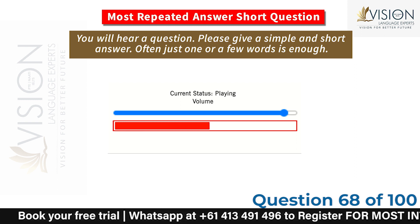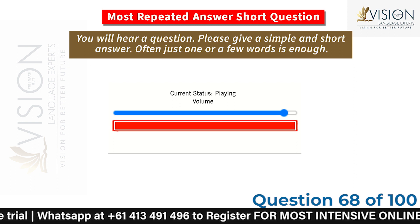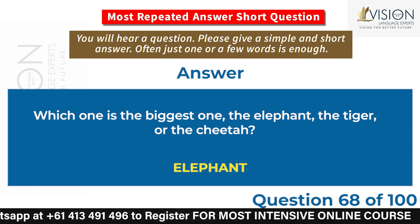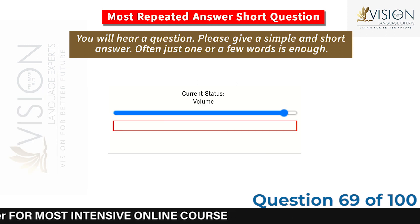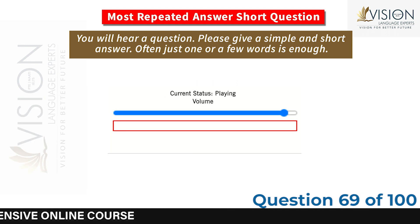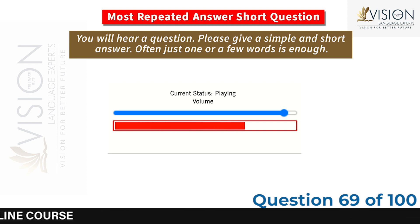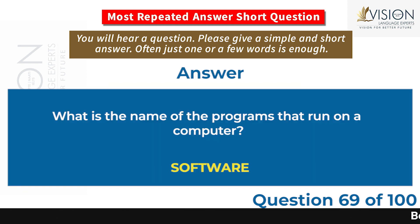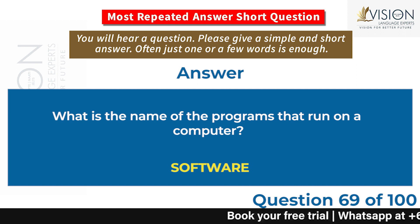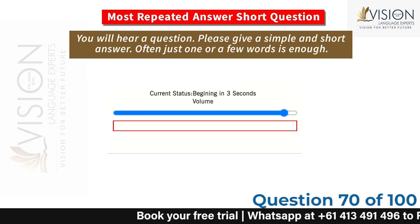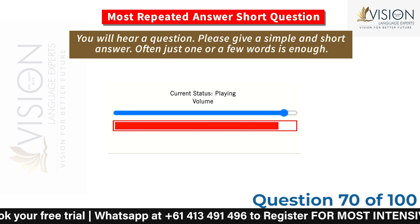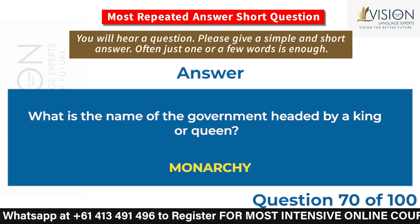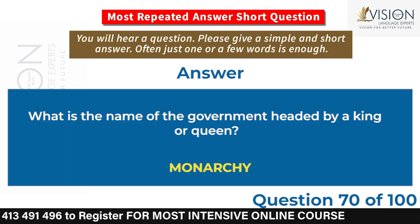Which one is the biggest — the elephant, the tiger, or the cheetah? Elephant. What is the name of the programs that run on a computer? Software. What is the name of the government headed by a king or queen? Monarchy.